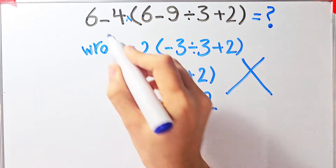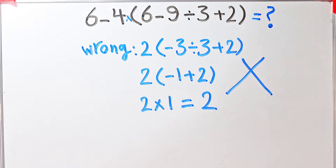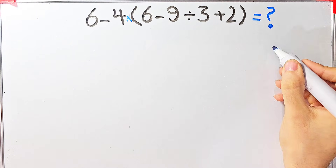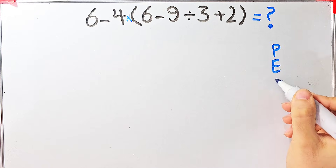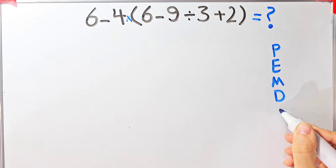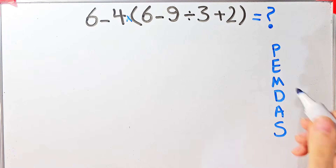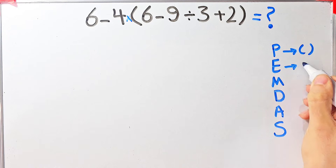They say the final answer equals two, but this answer is definitely wrong. Let's solve this question step by step together. To solve this question we need to follow the order of operations, which is PEMDAS. PEMDAS shows the priority of the mathematical operations, and if you don't pay attention to this rule you get the wrong answer.